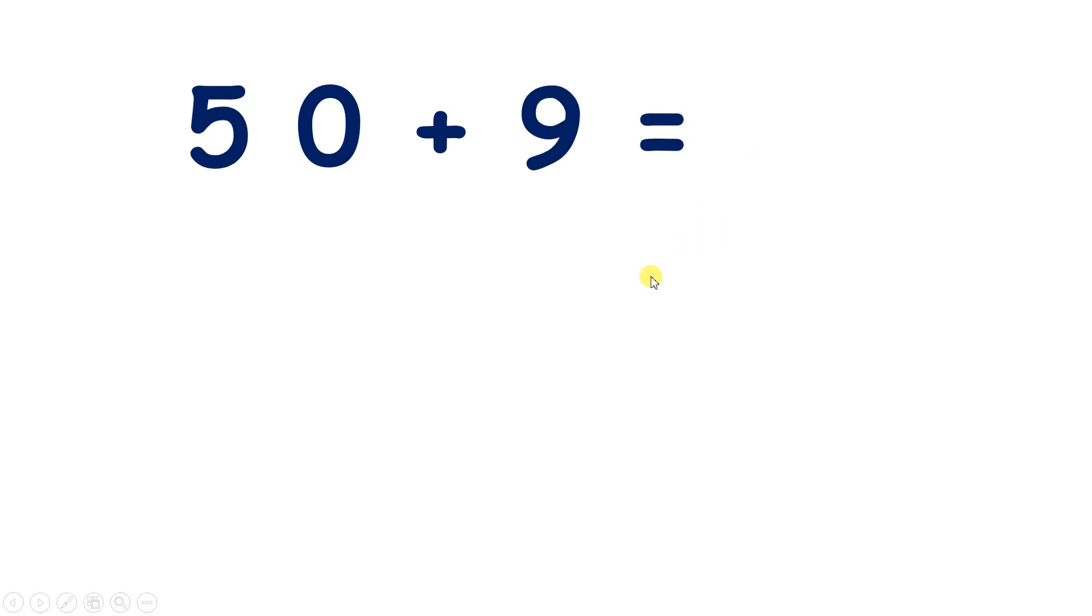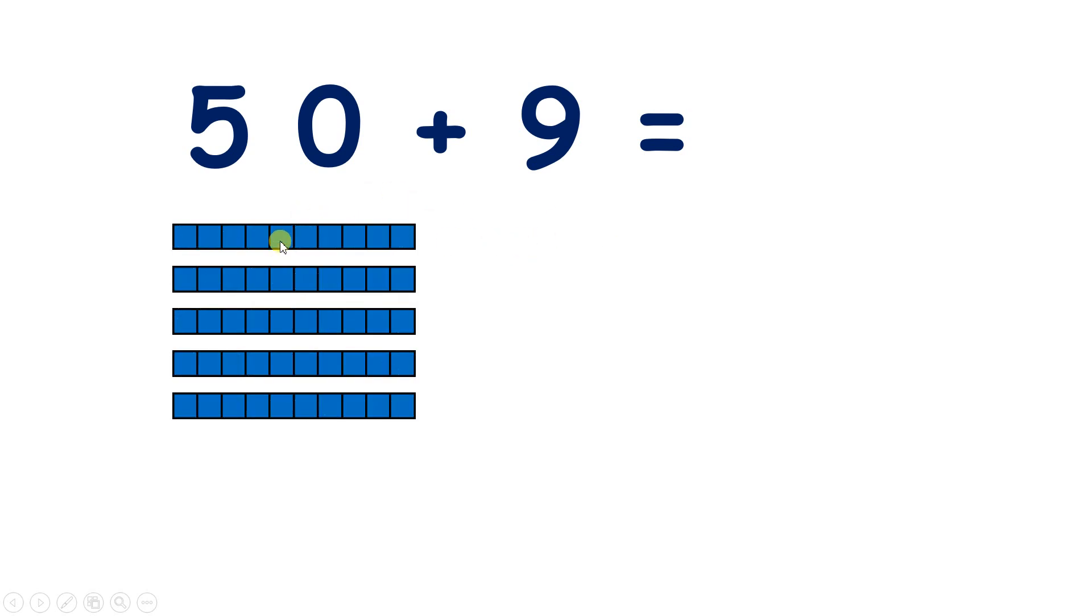Now you should be able to tell me very quickly, what is 50 plus 9? Well, 50 is 5 tens, and adding 9 units gives us 5 tens and 9 units, which we know is 59.